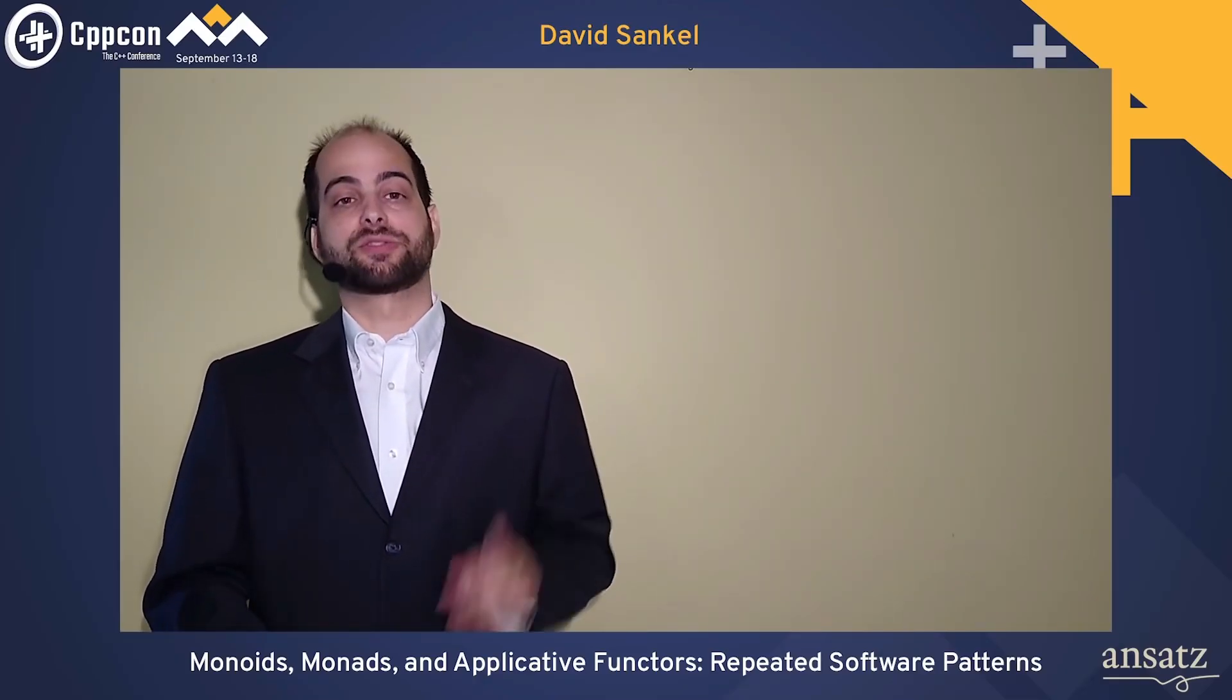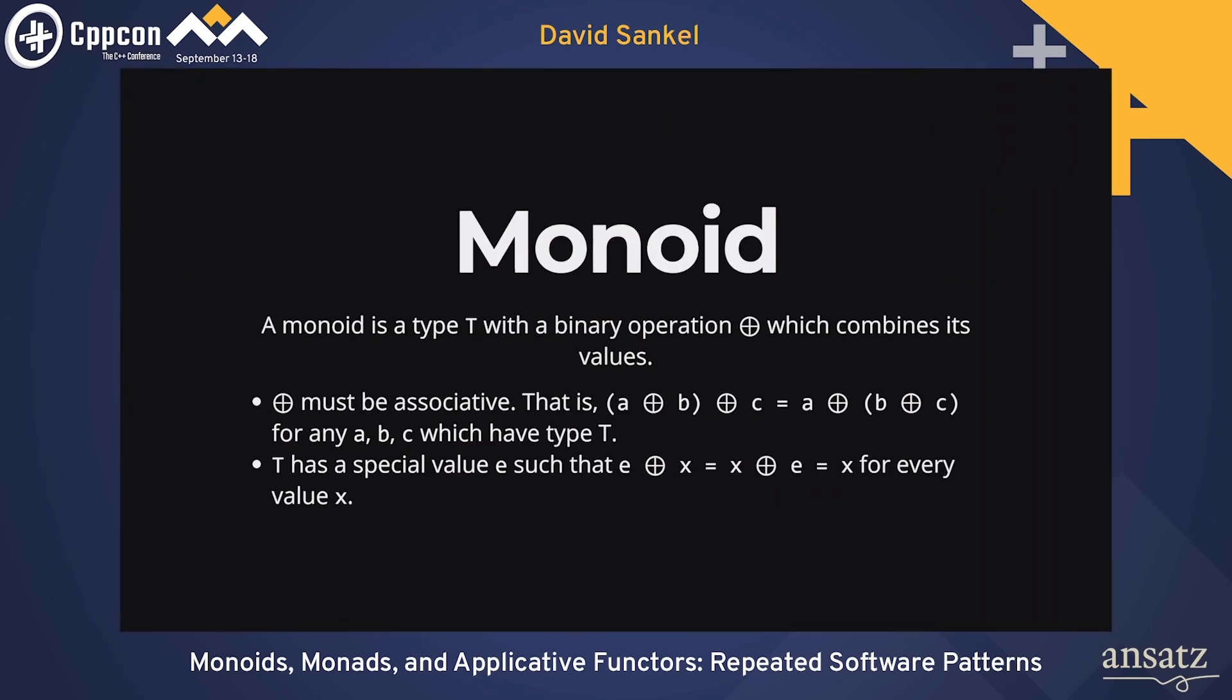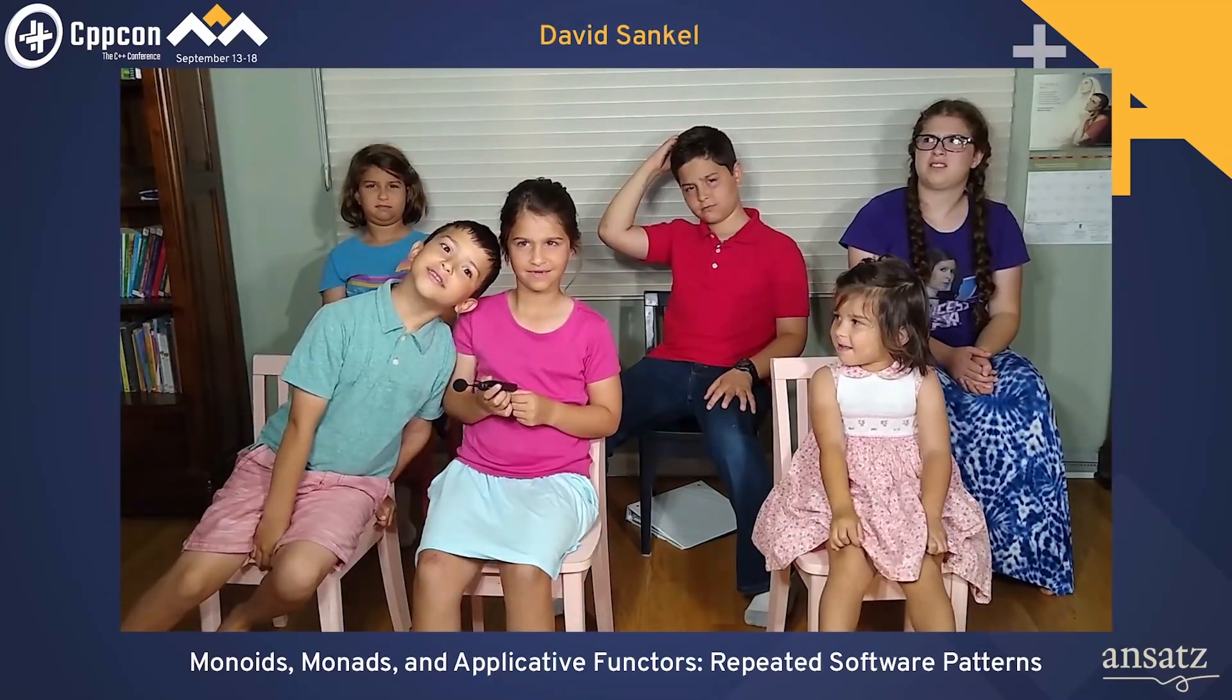Now, we're going to start taking a look at the first of our category theoretic concepts, which is called a monoid. So a monoid is a type in combination with a binary operation. Type T, some kind of binary operation, which is like a cross with a little circle in it. Now, the binary operation combines the values. Now, in order for a type combined with a binary operation to be considered a monoid, all you have to do is have these two properties. First, that operation needs to be associative. A op b op c is the same thing as doing b op c and then doing a op that at the end of it for every single value. Now, also, this type needs to have a special value e such that e op x is the same thing as x op e, which is just x. In other words, it's the identity operation. When you apply it to the operation, you get this almost like an identity function. Does that all make sense to you?